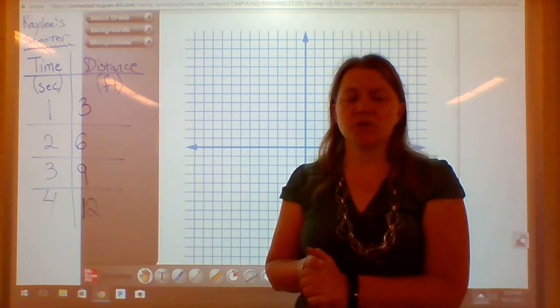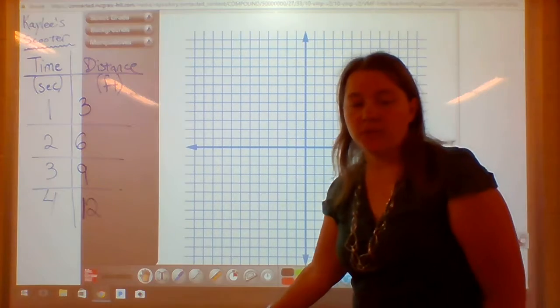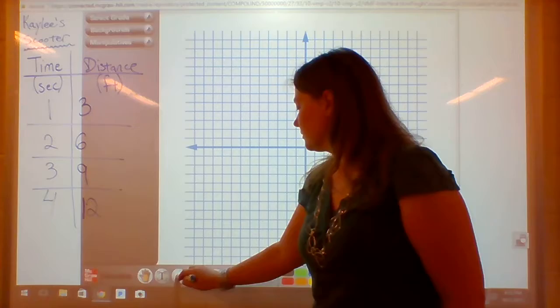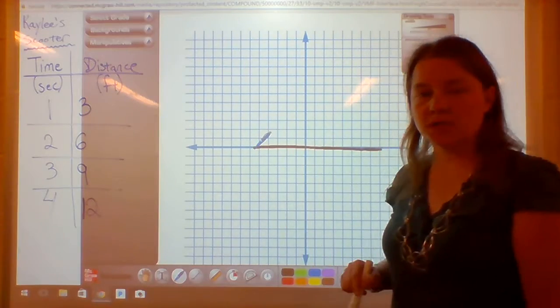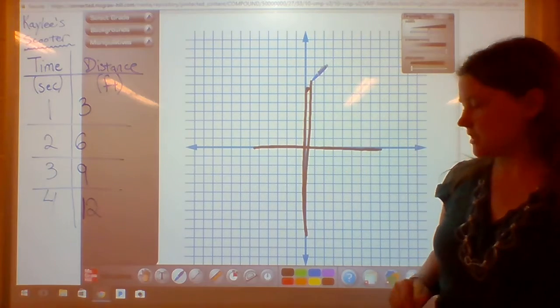What you're going to notice about this coordinate plane is that there's a lot of things going on here. We have the x axis, which goes across. We have the y axis that goes up and down.